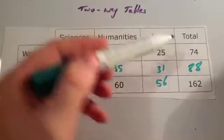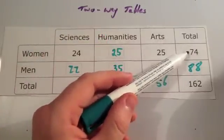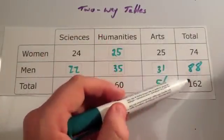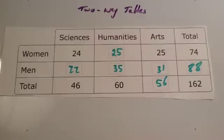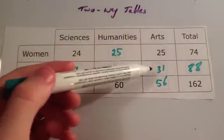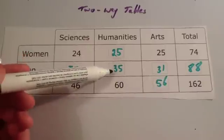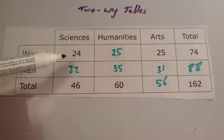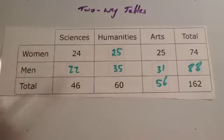Now let's double check our answers. We've worked out there are 88 men, and if we add that to the 74 women, hopefully we'll get 162. Well, 74 plus 88 is 162. And if you just double check your calculations: 25 plus 31 is 56, 25 plus 35 is 60, and 24 plus 22 is 46. It seems to be right.